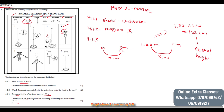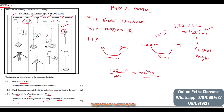Now after finding our actual height of the floor lamp in centimetres, the question is asking us to determine the height in the diagram using the scale 1 to 25. The 1 represents the diagram and 25 represents real life. So we take 155 divided by 25, and the answer will be 6.2 centimetres.